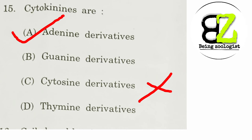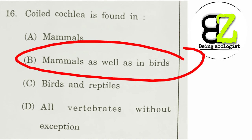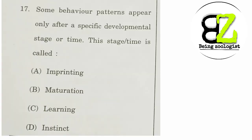Next: coiled cochlea is found in which group? This is a unique feature of mammals, so the answer is option A — mammals. Coiled cochlea is part of the internal ear and is found only in mammals. Option B gives mammals as well as birds to confuse you, but coiled cochlea is not found in birds.